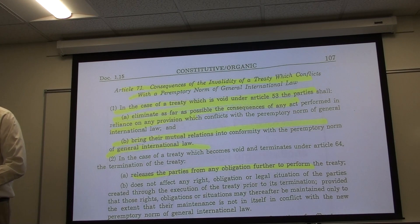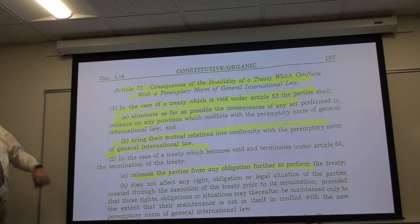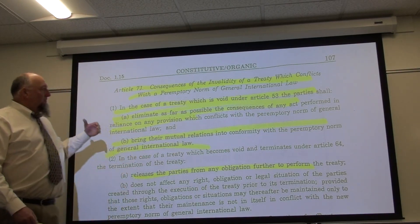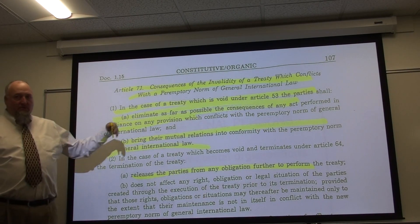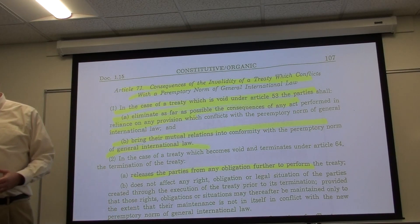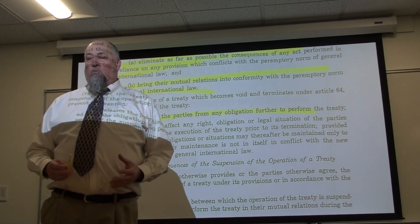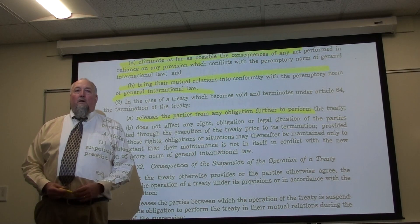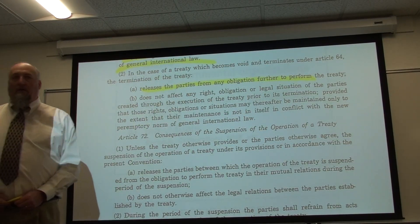Article 71 addresses the consequences of invalidity of a treaty that conflicts with a peremptory norm under Article 53. The parties must: (A) eliminate as far as possible the consequences of any act performed in reliance on the conflicting provision, and (B) bring their mutual relations into conformity with the peremptory norm. Parties are thus obligated to stop engaging in those actions, modify or terminate the treaty, and are released from any further obligation to perform under the void treaty.